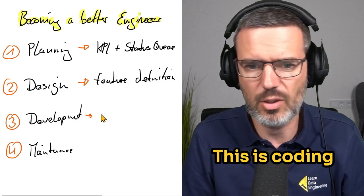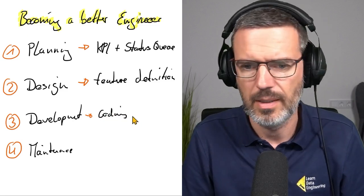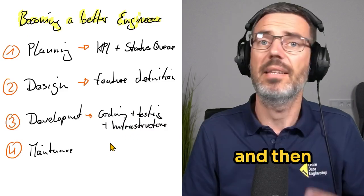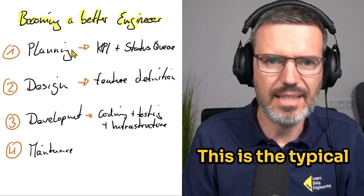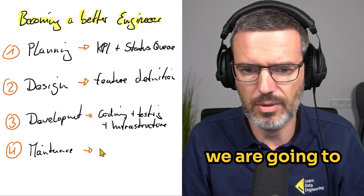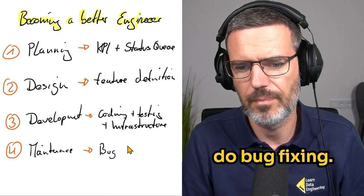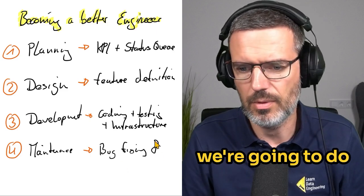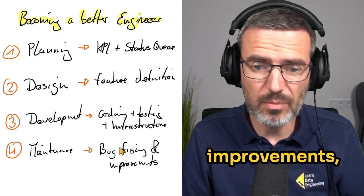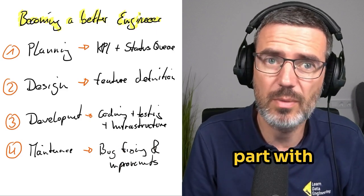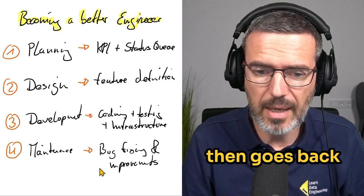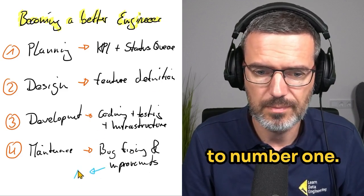And then maintenance. This is the typical use case of, okay, this is where we are going to do bug fixing and this is where we're going to do improvements. But again, with improvements, what is the important part? The improvements part actually then goes back to number one, goes back to the planning.